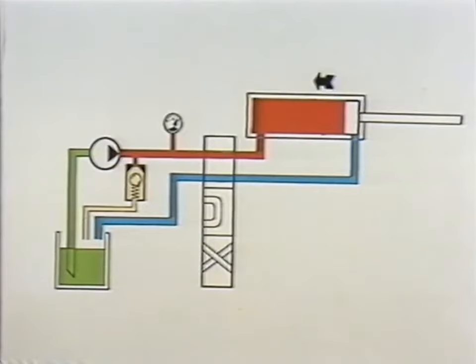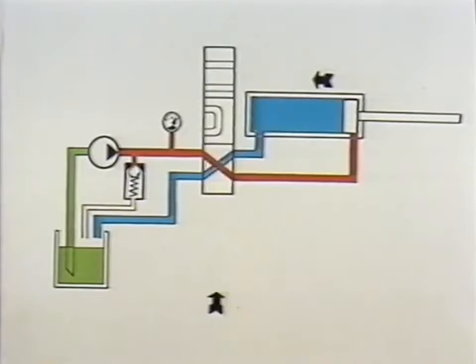If we now want the piston to return to its original position, then the volume flow from the pump should now move to the minus side of the cylinder. This entails connecting the plus side to the tank so that the fluid can flow back. This is achieved with the valve shown.